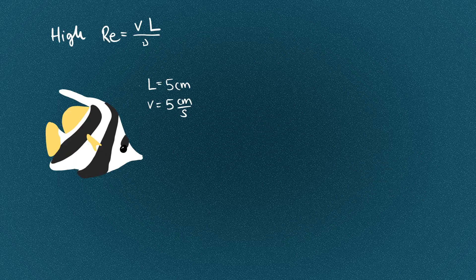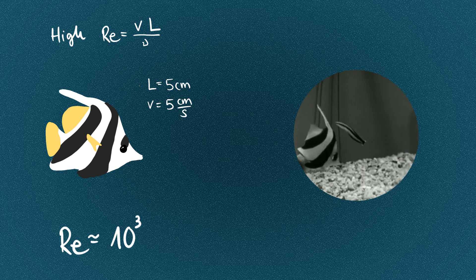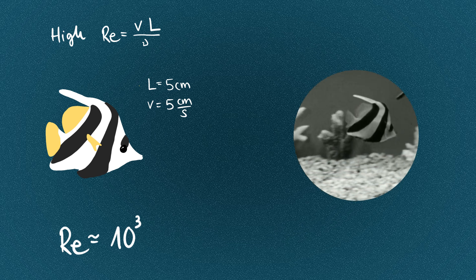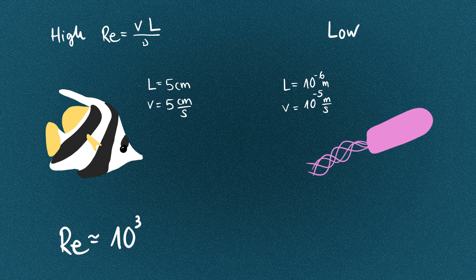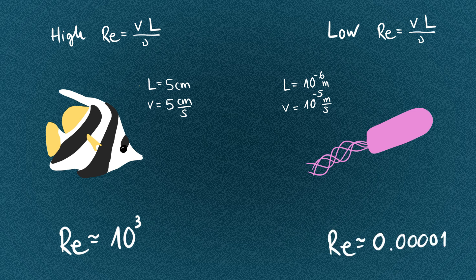Larger organisms, like a 5 cm fish swimming in water at 5 cm per second, have a higher Reynolds number. This means that inertial forces play a big role, and a single fin flap can propel the fish a considerable distance. In contrast, a tiny bacterium with a length of a micrometer, swimming in a watery environment at a speed of 10 micrometers per second, has a Reynolds number of just 0.00001.